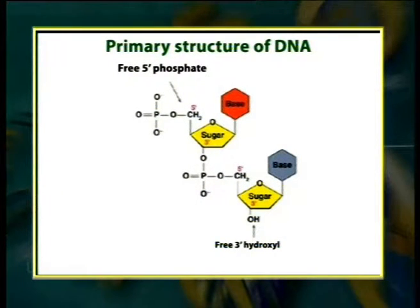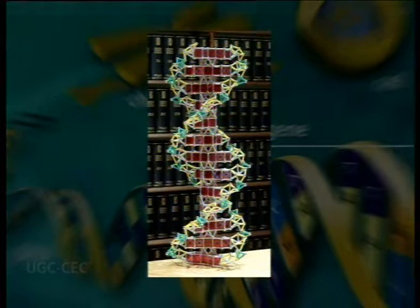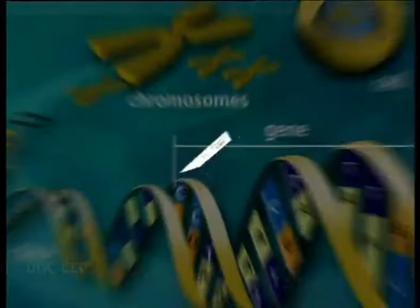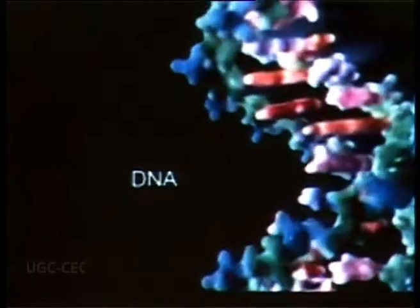It is sometimes useful to describe nucleic acid structure in terms of increasing levels of complexity: primary, secondary, and tertiary. The primary structure is the covalent structure and nucleotide sequence. Any regular stable structure taken up by some or all the nucleotides in a nucleic acid can be referred to as secondary structure. The complex folding of large chromosomes within the bacterial nucleoid and eukaryotic chromatin is generally considered tertiary structure.